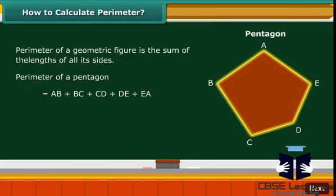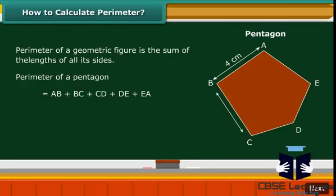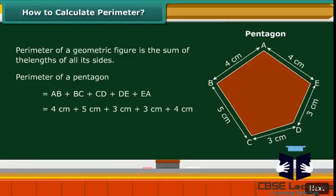BC as 5 centimeters, CD as 3 centimeters, DE as 3 centimeters, and EA as 4 centimeters. The perimeter of the pentagon is 4 centimeters plus 5 centimeters plus 3 centimeters plus 3 centimeters plus 4 centimeters. That is equal to 19 centimeters.